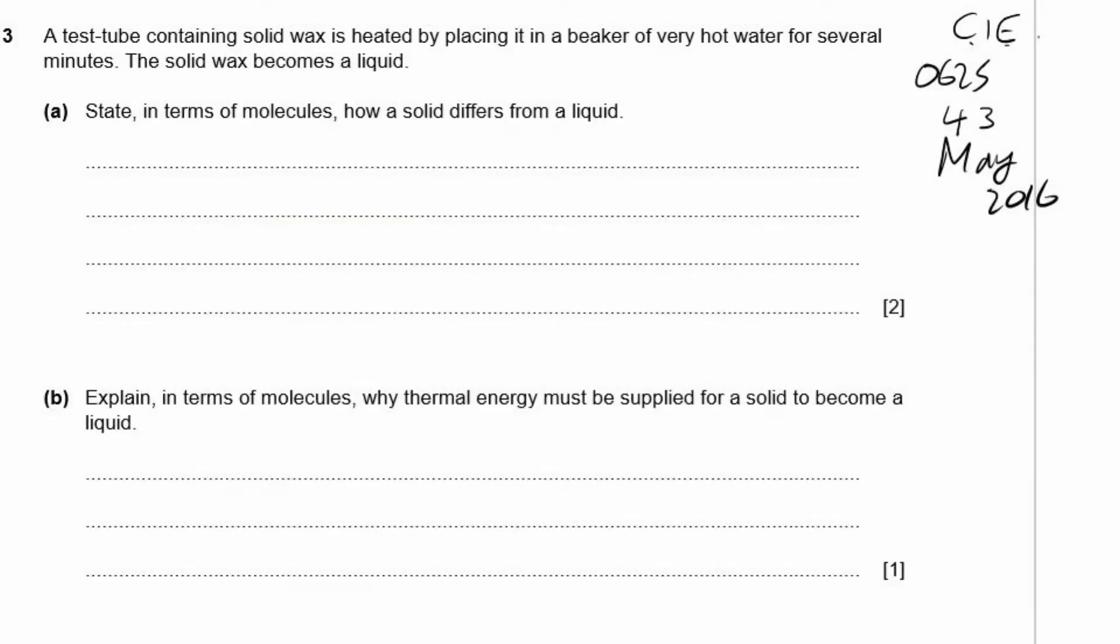This is a CIE exam, 0625, paper 43, May 2016, question three. A test tube containing solid wax is heated by placing it in a beaker of very hot water for several minutes. The solid wax becomes a liquid. State, in terms of molecules, how a solid differs from a liquid. Well, as we saw in the diagram, the molecules are very closely packed in the solid. Also, the molecules in a solid can't move around. Molecules in a solid have regular positioning, whereas in a liquid they don't.